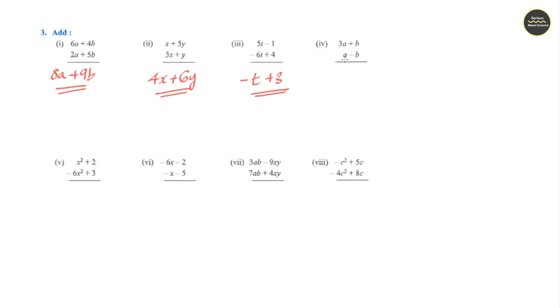Question 4: 3a plus a gives 4a; minus b minus b gives 0. Answer is 4a.